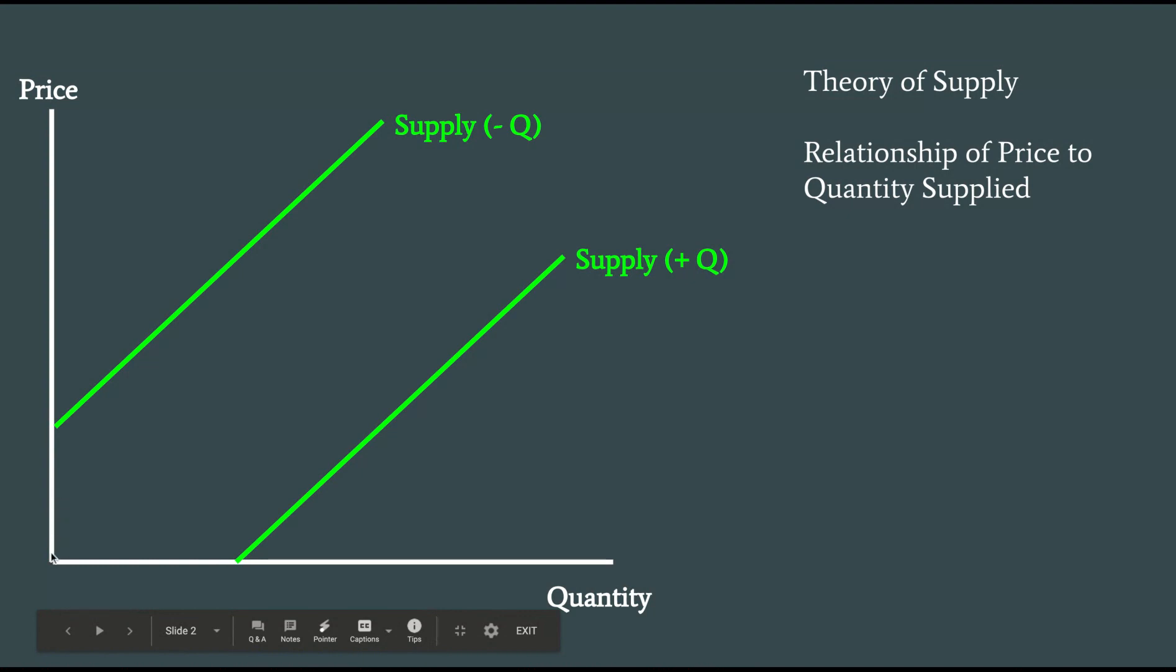So what can we say about them? We can say that here, there's some positive price that has to exist before we can supply any. And you might go, well, isn't that true of everything? Well, maybe and maybe not. We'll see more about that in a moment.